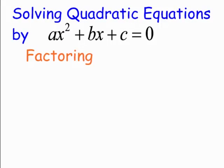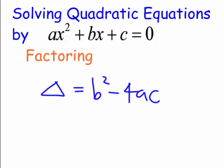Today we're looking at solving quadratic equations via the factoring technique. The first thing we have to work out is: can we actually factor the quadratic expression? We first look at the discriminant of the equation. The discriminant is represented by delta, equal to b squared minus 4ac. If this value is a perfect square or zero, we know we can in fact factor it.